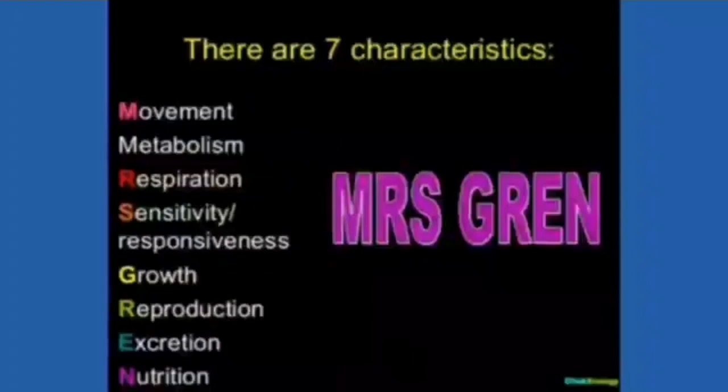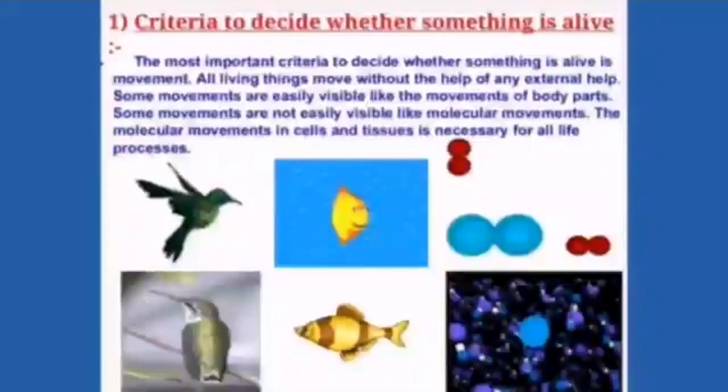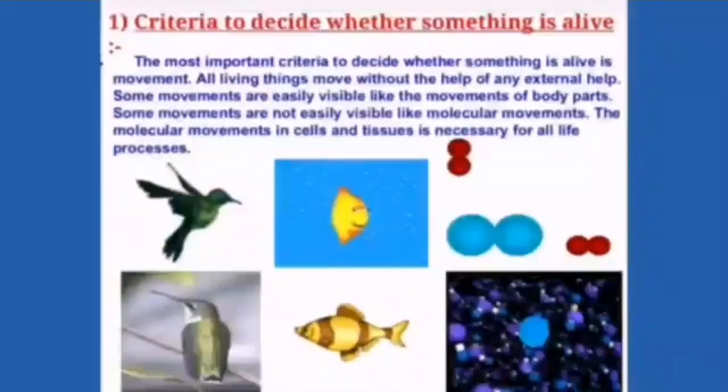Now the most important of these characteristics is movement which is of two types. It is visible, that is change in position of any of the body parts, and it can be invisible that can occur at level of molecules. Both these visible and invisible movements are the deciding factor whether something is alive or not. Thus we can say the most important criteria to decide whether something is alive is movement.